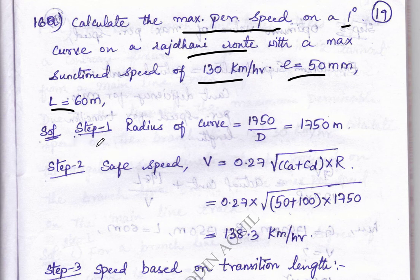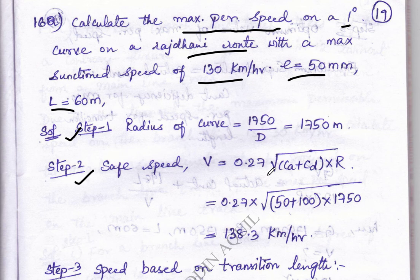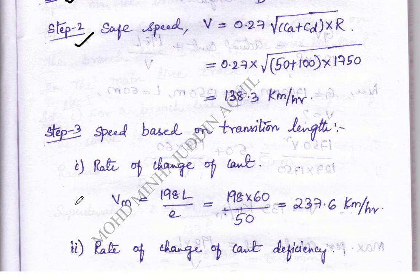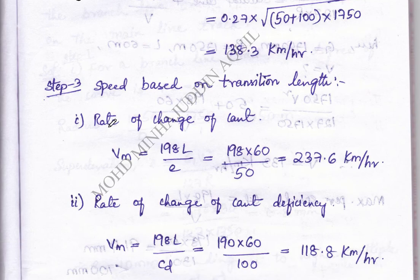As I have told you in the previous problem, the first step is always to calculate the radius of curvature. The next step is to calculate the safe speed, which can be calculated by the formula V = 0.27 × √(Ca + CD) × R.